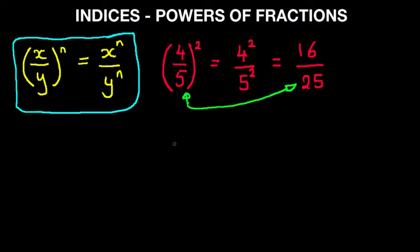Let's move on to our next example. This time we have 2 thirds to the power of 4. Now again, using our rule, this becomes 2 to the power of 4 over 3 to the power of 4. So we're multiplying the brackets out.